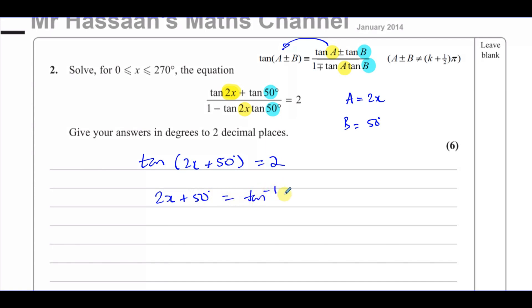Well, we can find the inverse tan of 2x plus 50. Sorry, the inverse tan of 2. So we take the inverse tan of both sides. The inverse tan of tan of 2x plus 50 gives us 2x plus 50. The inverse tan of 2 gives us the inverse tan of 2, which we can find.